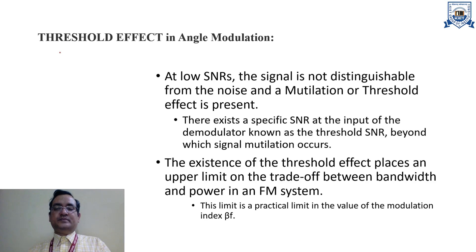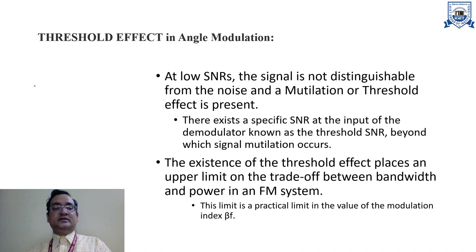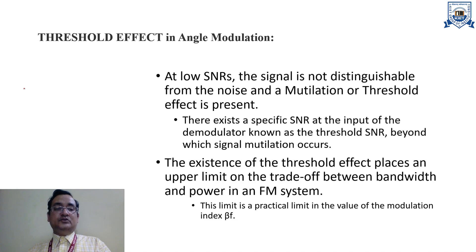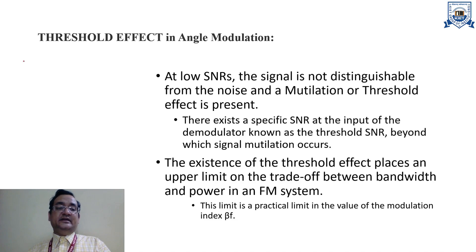The phase deviation produced by the noise signal in FM is much smaller than that produced by the modulating signal, provided the noise is smaller than the carrier. Thus in the low noise case, the distortion produced by noise at the output of the FM detector is negligible compared to the desired modulating signal. In other words, noise is almost suppressed by the signal when the noise voltage is very low compared to the carrier signal.